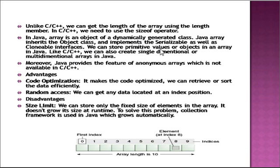Java Array implements the Serializable as well as Cloneable interfaces. We can store primitive values or objects in an array. Java also provides the feature of anonymous arrays, which is not available in C++.